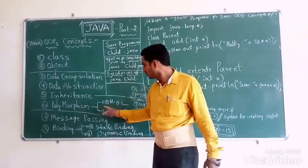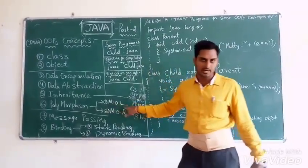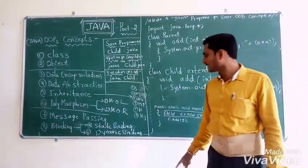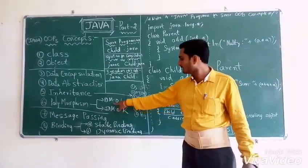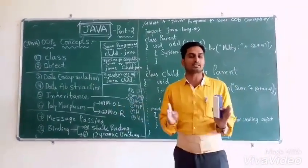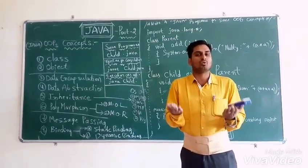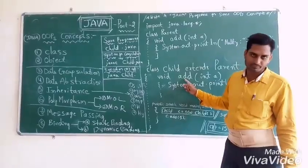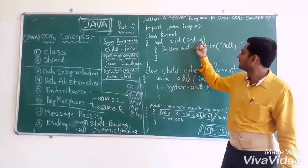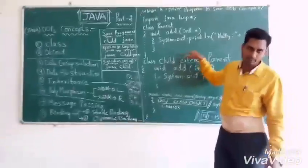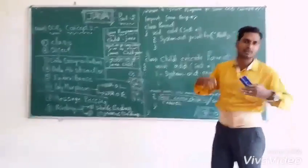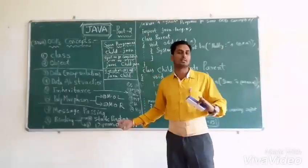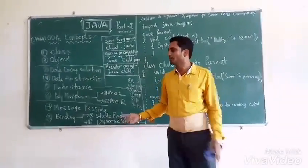Polymorphism has two types: method overloading and method overriding. Method overloading is done in the same class — the method name is the same but with different parameters. Method overriding is done in different classes, where the same method name exists in both the parent and child class.